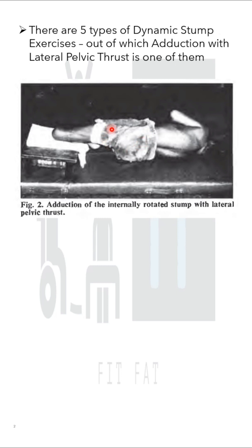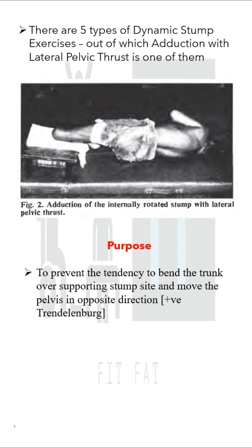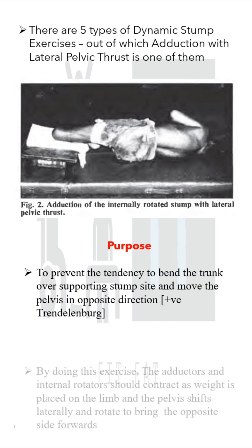The therapist can either assist or resist with the movement. The purpose of this exercise is to prevent the tendency to bend the trunk over the supporting stump side and move the pelvis in the opposite direction — that is, to prevent the positive Trendelenburg sign.